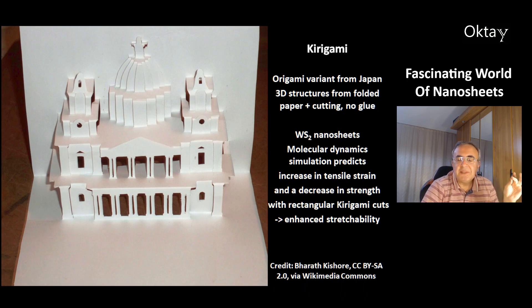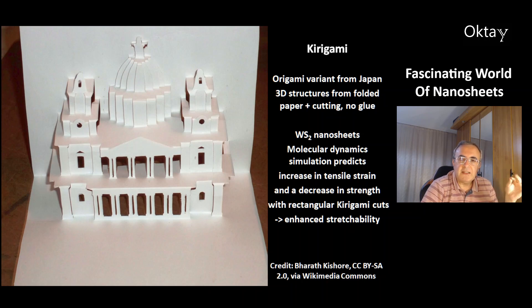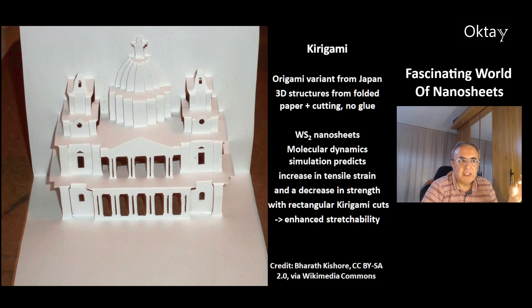This is a picture of a kirigami — a version of origami from Japan used to build 3D structures from folded paper. Origami uses only folding, while kirigami uses both folding and cutting techniques, and no glue is required. You can apply this technique to tungsten disulfide nanosheets. A molecular dynamics simulation predicted an increase in tensile strain and a decrease in strength with rectangular kirigami cuts, meaning you can make nanosheets with enhanced stretchability.